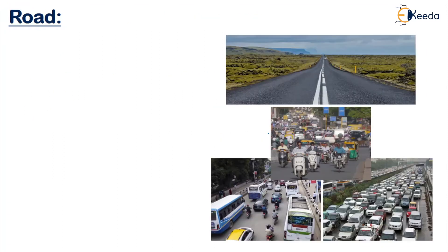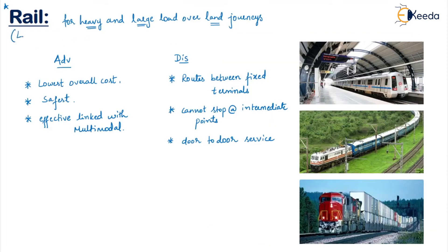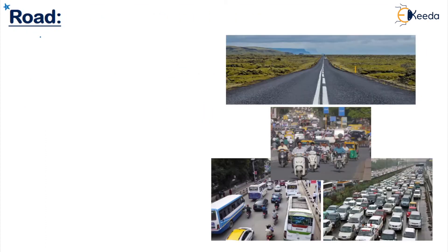Moving on to the next type, which is road transport. Rail transport and road transport both come under land transport, wherein we are using the land for transport. Road transport is the most common type of transport we have. It can be done using various types of vehicles — two-wheelers, four-wheelers, three-wheelers, trucks, lorries, buses — a large number of vehicle types are available for road transport.